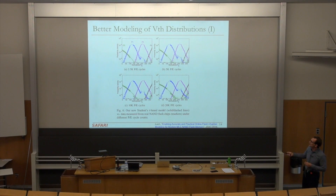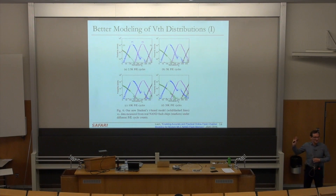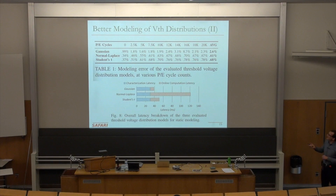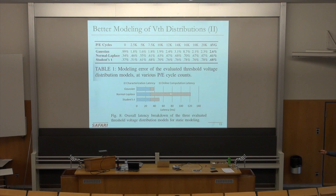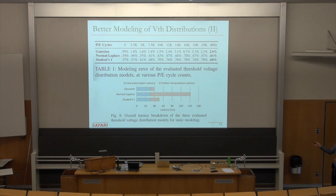The dashed lines are the model and the triangles are measured values. There are still some imperfections, but it is quite good. With the Gaussian model, the error rate is 2.6%, which is still high compared to the Student's T distribution. A normal Laplace model has lower error rate but is much harder to compute. Student's T is a good compromise between online computation latency and the error rate you get in the end.